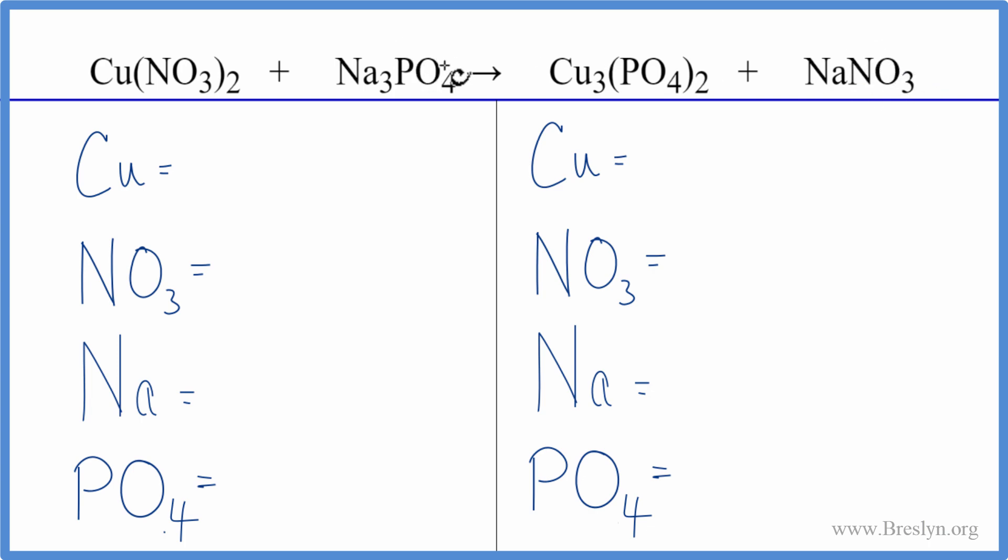Same with the phosphate. We have a phosphate ion, this PO4 here, and we have it again here. So we're just going to call it one item. That makes the balancing a lot easier for double displacement reactions.